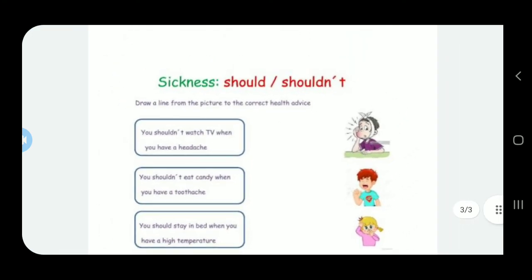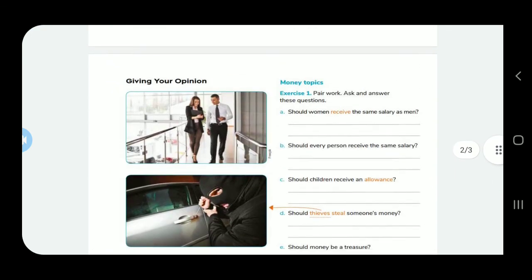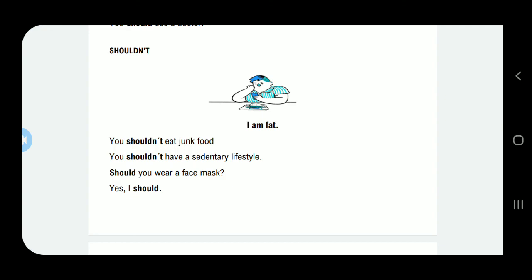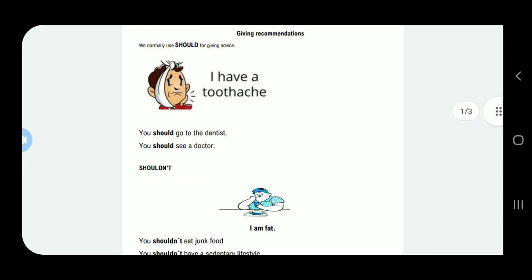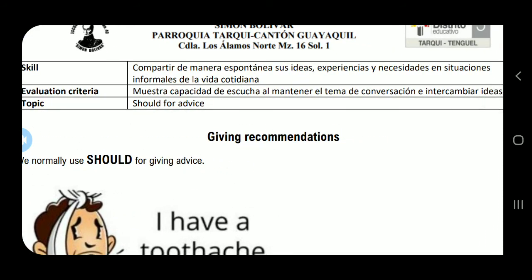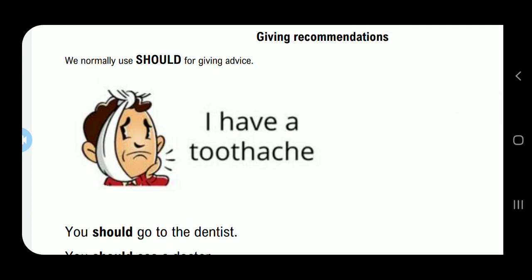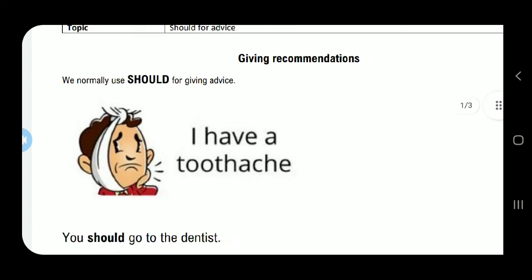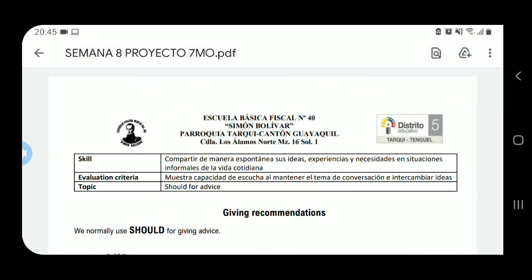And that's the end of the class. What did we learn today? We learned to identify problems and give solutions. We look for solutions to problems, not more problems. In English, we use the verb 'should' to recommend something to someone — that was 'giving recommendations.' We don't oblige anyone; we recommend. For example: toothache? 'You should see a doctor. You shouldn't eat candy.' Thank you all for watching. See you next week. Bye!